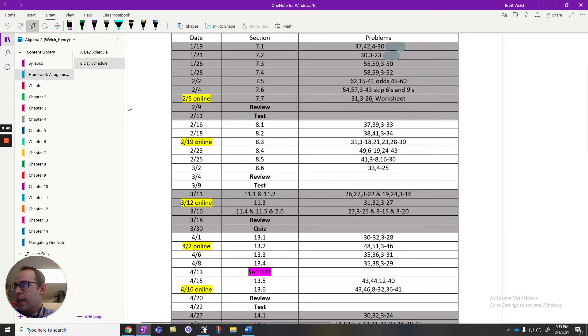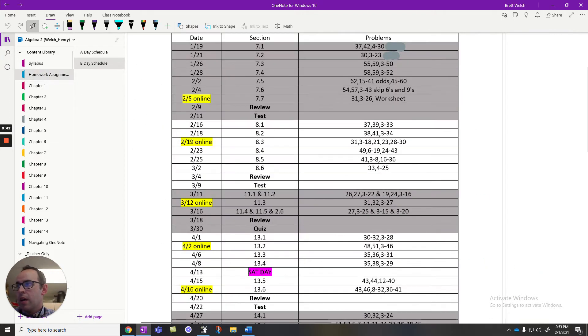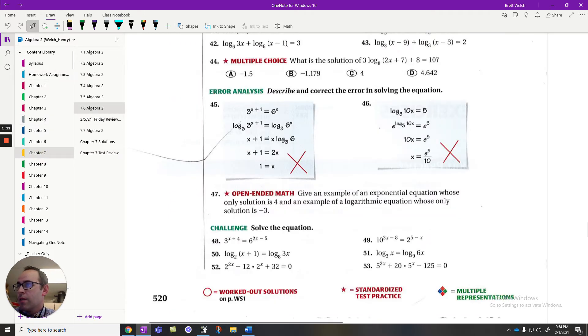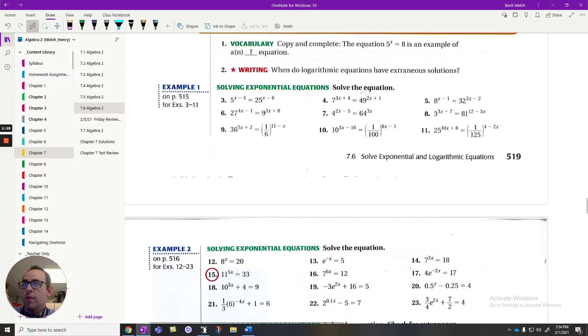If you look at the homework assignment for B-Day on the 4th, it's 54, 57, 3-43, skip 6s and 9s. I had a lot going on there, we're going to tweak this and really pare it down for you guys. We need to make sure that we walk away with a clear understanding of certain concepts. Look at the homework assignment that I leave for you that day and make sure you're focused on the things I'm asking you to do there.